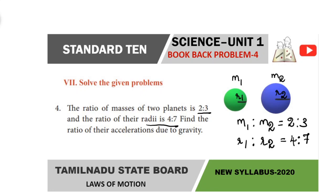Now, what is to be calculated? Find the ratio of their accelerations due to gravity. Acceleration due to gravity symbol is small g. So we need to find G1 is to G2.